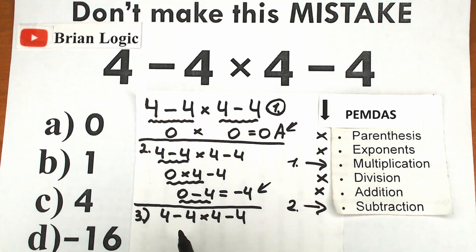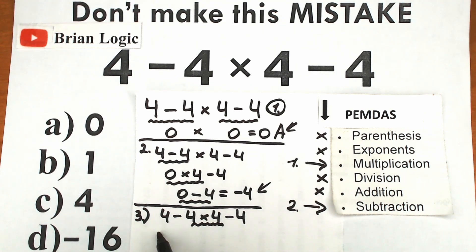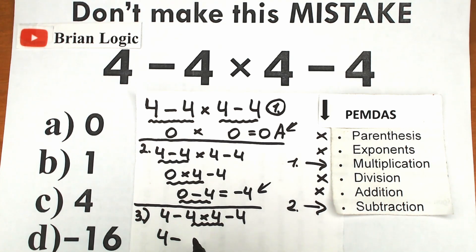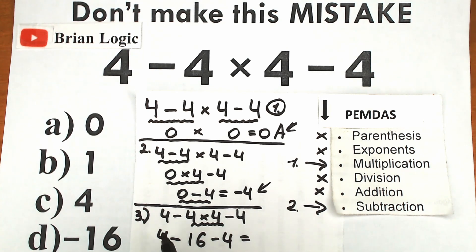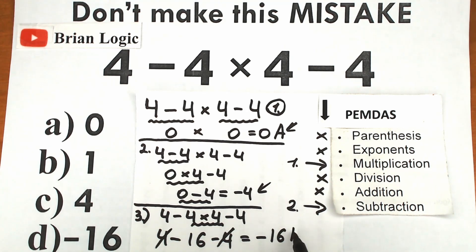The multiplication sign is in the middle, so we evaluate 4 times 4 first, which gives us 16. Our expression becomes 4 minus 16 minus 4. Performing the subtraction, we cancel terms and get minus 16 — that's option D.